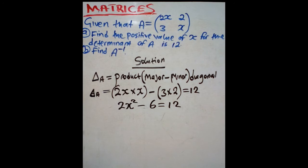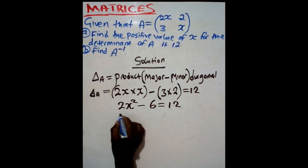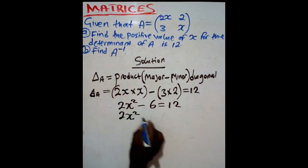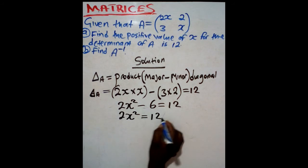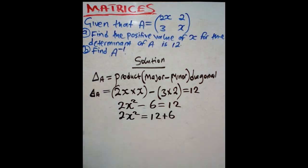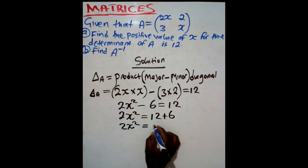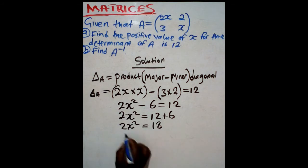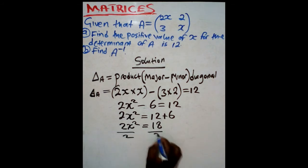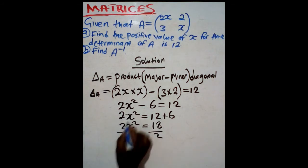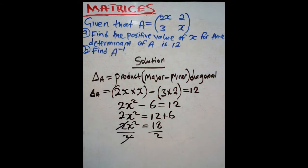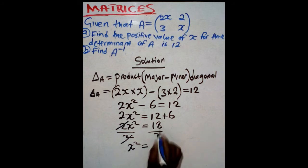After that, you can collect the like terms. You have 2X squared is equal to 12 plus 6, which will give you 18. Divide by 2 on both sides, and that will cancel. Then X squared is equal to 18 divided by 2, which gives you 9.